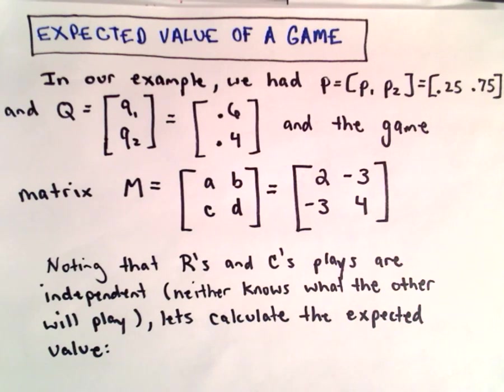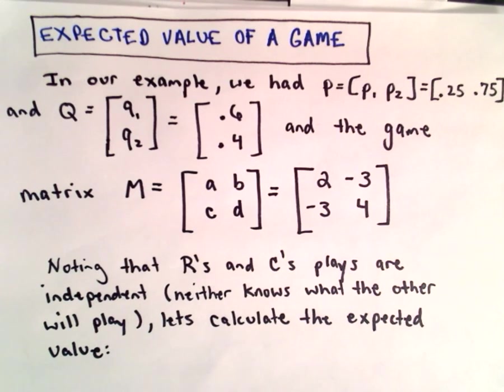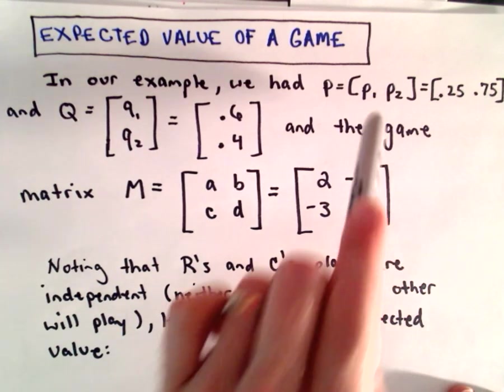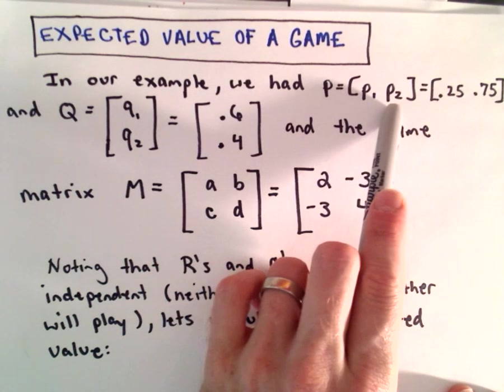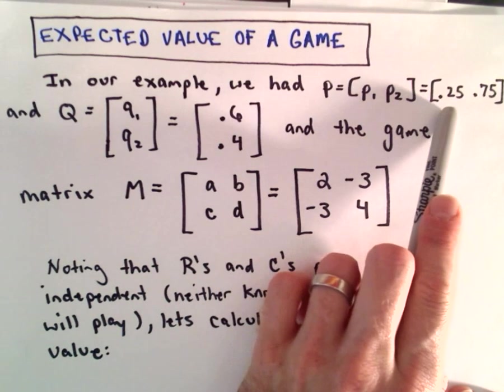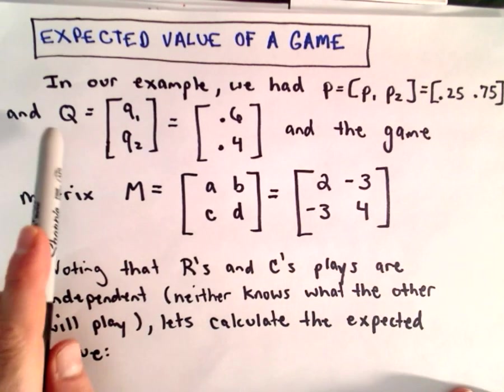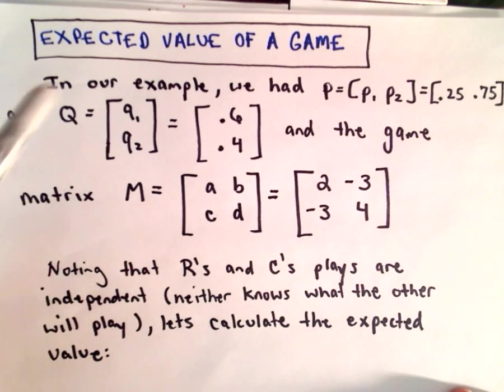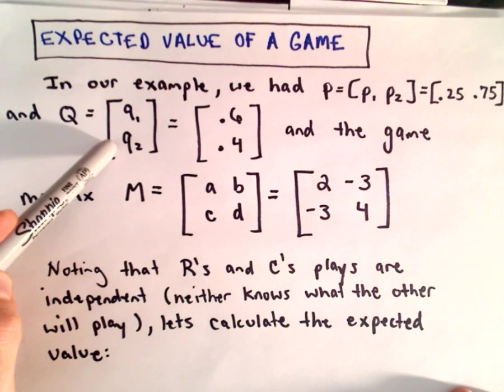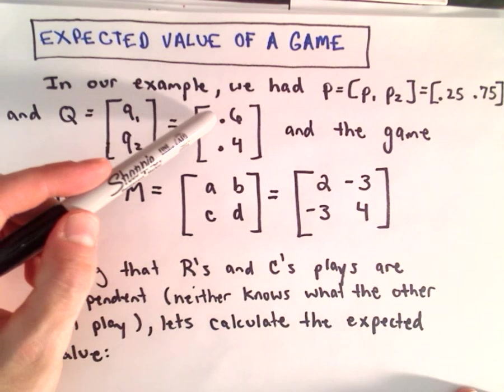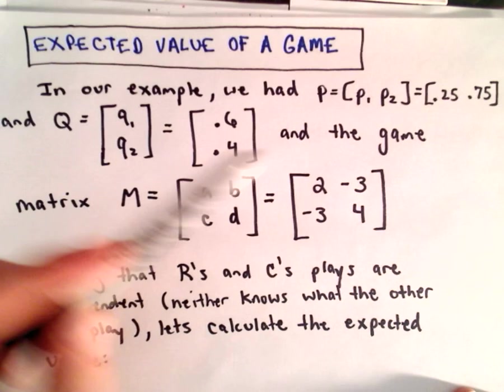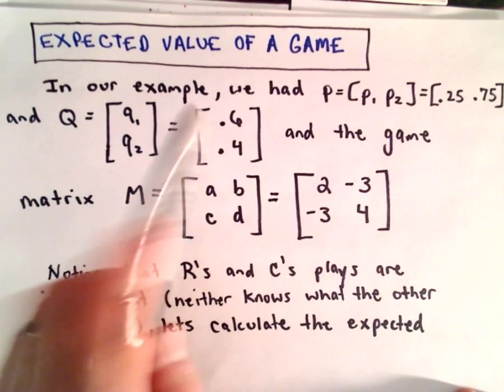Here we're going to look at calculating the expected value of our 2x2 matrix game. In our example, we had that the first player would choose the first and second row respectively with a probability of 0.25 and 0.75, and that the column player would choose the first column and the second column with a probability of 0.6 and 0.4 respectively. We just arbitrarily chose those values.